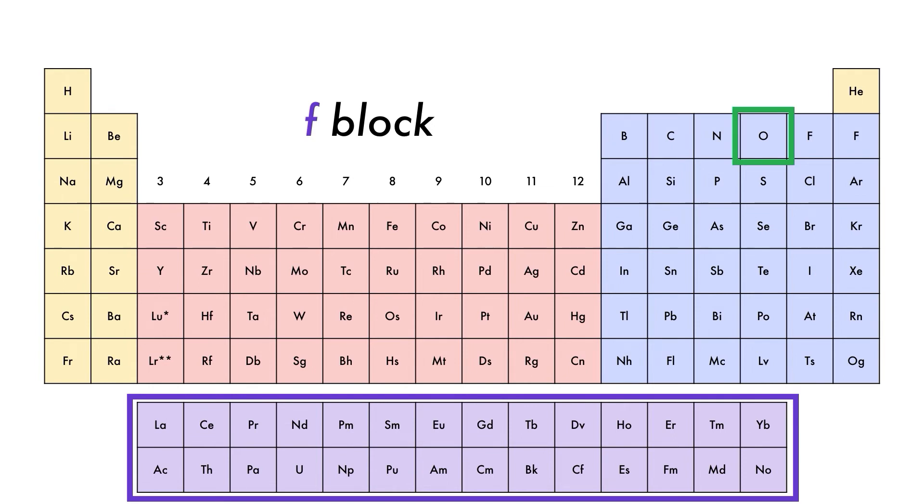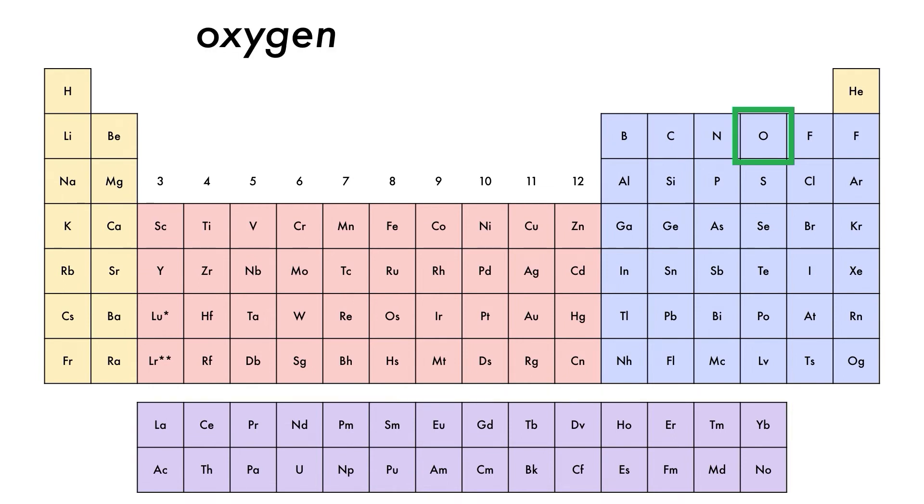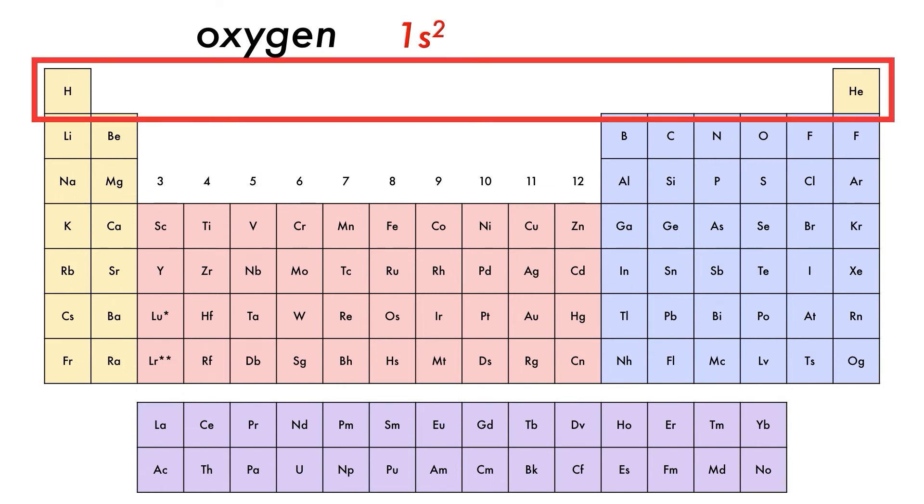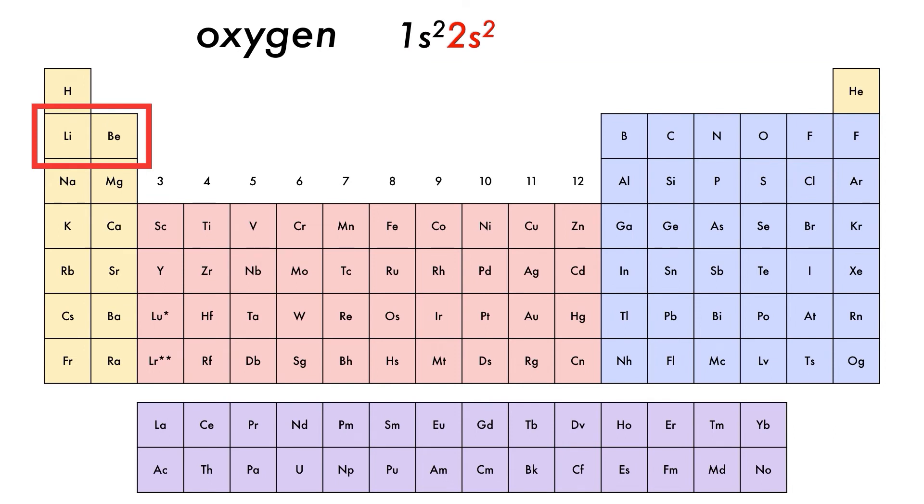Now let's do this process for oxygen. The 1s is full, so that is 1s2. The 2s is also full, so that is 2s2. And finally we count across the p-block until we get to oxygen, which shows that there are four electrons in the p-shell, so that will be 2p4, giving us our final oxygen electronic configuration of 1s2 2s2 2p4.